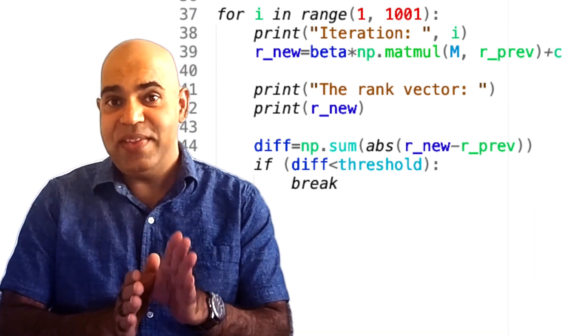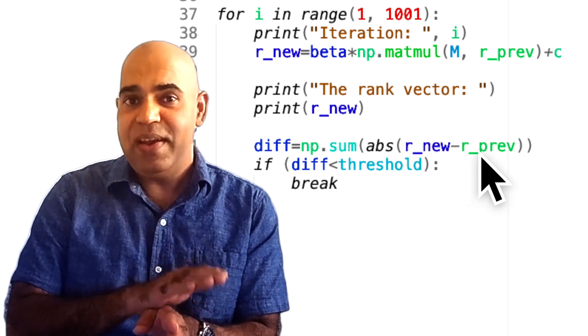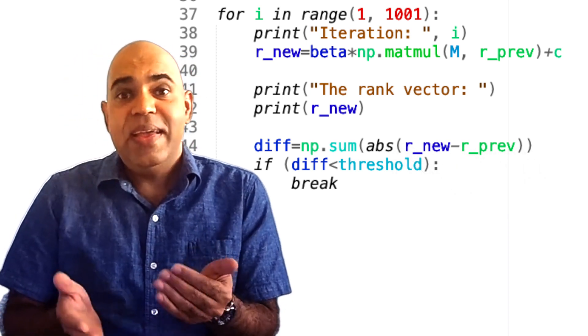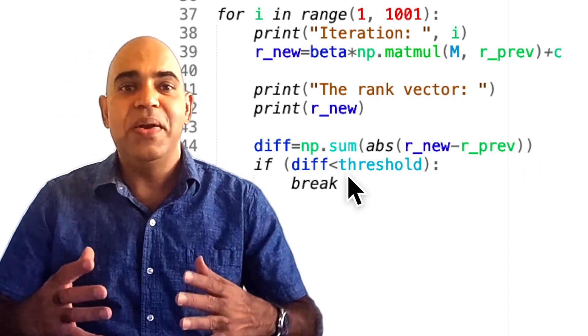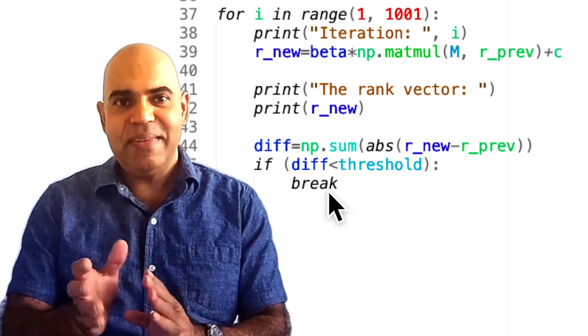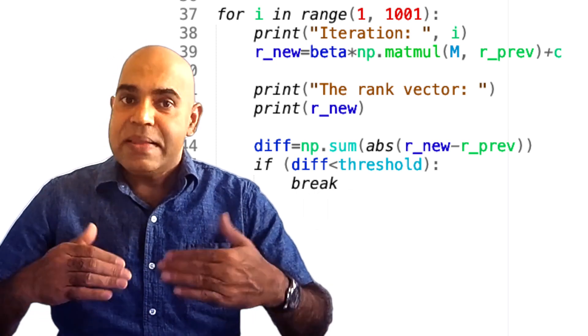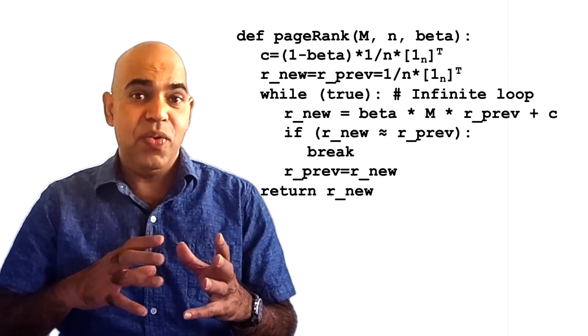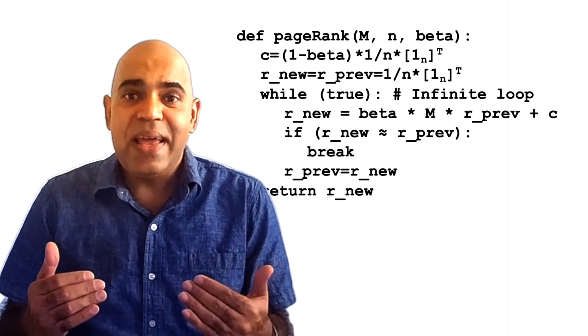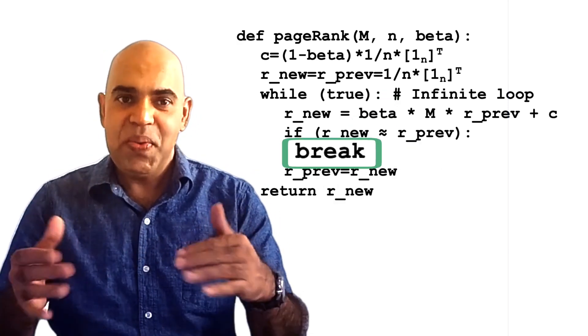We then check if the L1 norm of the absolute difference between r_new and r_prev is less than our predefined threshold. If it is, we break the loop because our rank vector has converged. This is the part where in our pseudocode we said when r_new and r_prev are almost equal, we break the loop.